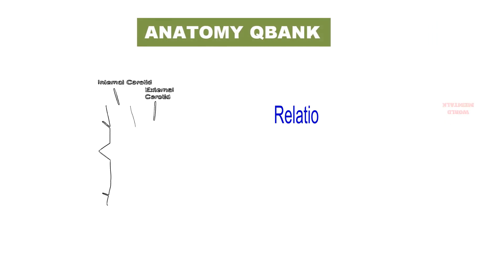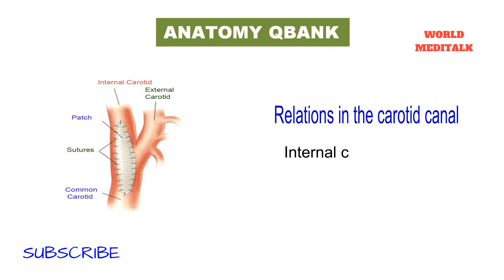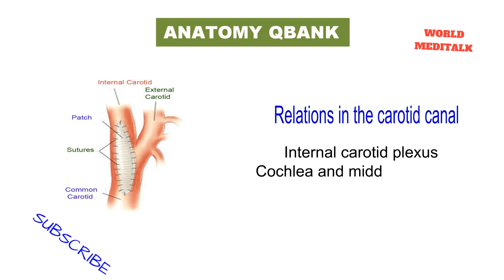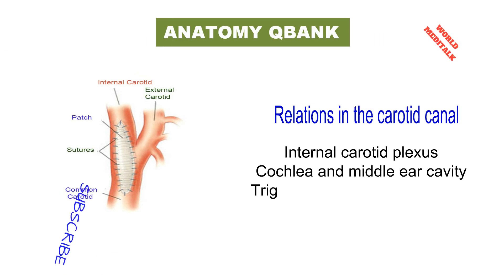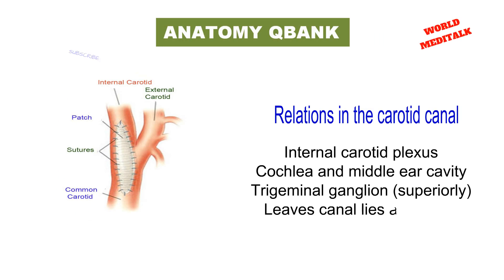Relations in the carotid canal include the internal carotid plexus, cochlear and middle ear cavity, and the trigeminal ganglia superiorly. The artery leaves the canal and lies above the foramen lacerum.